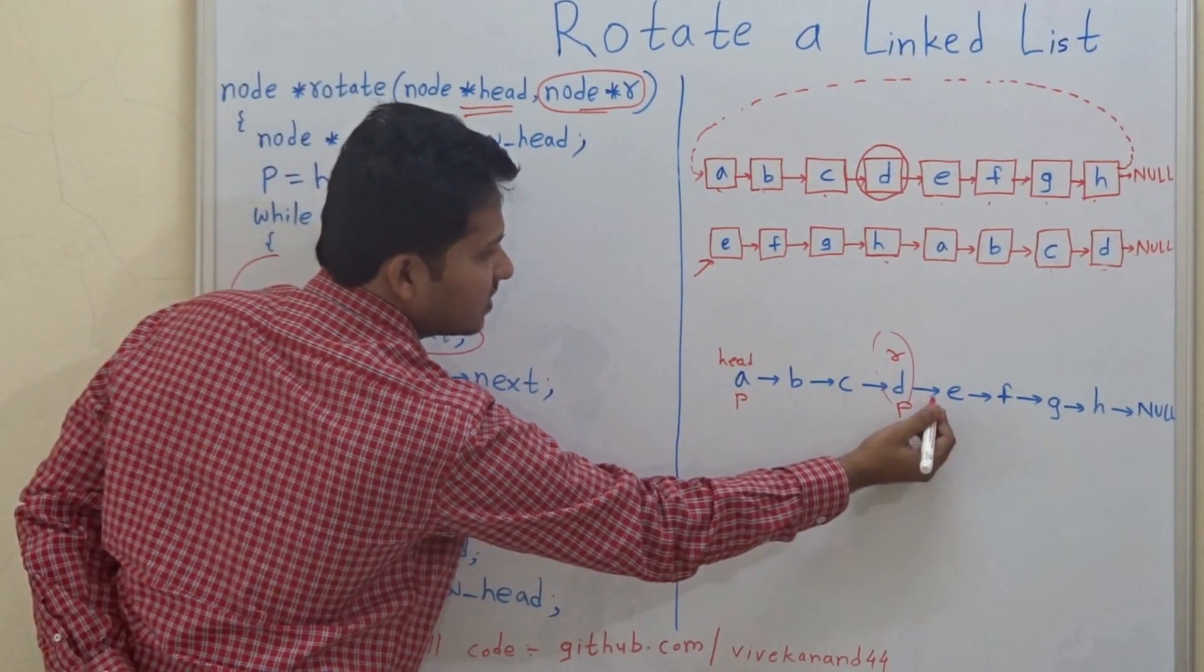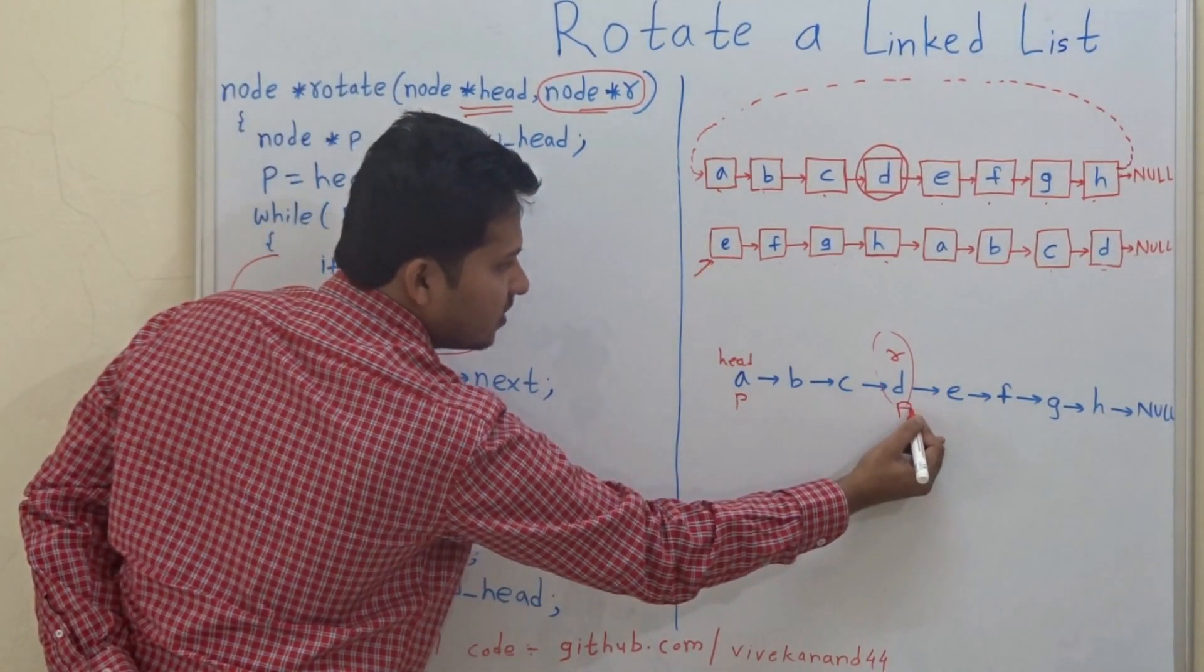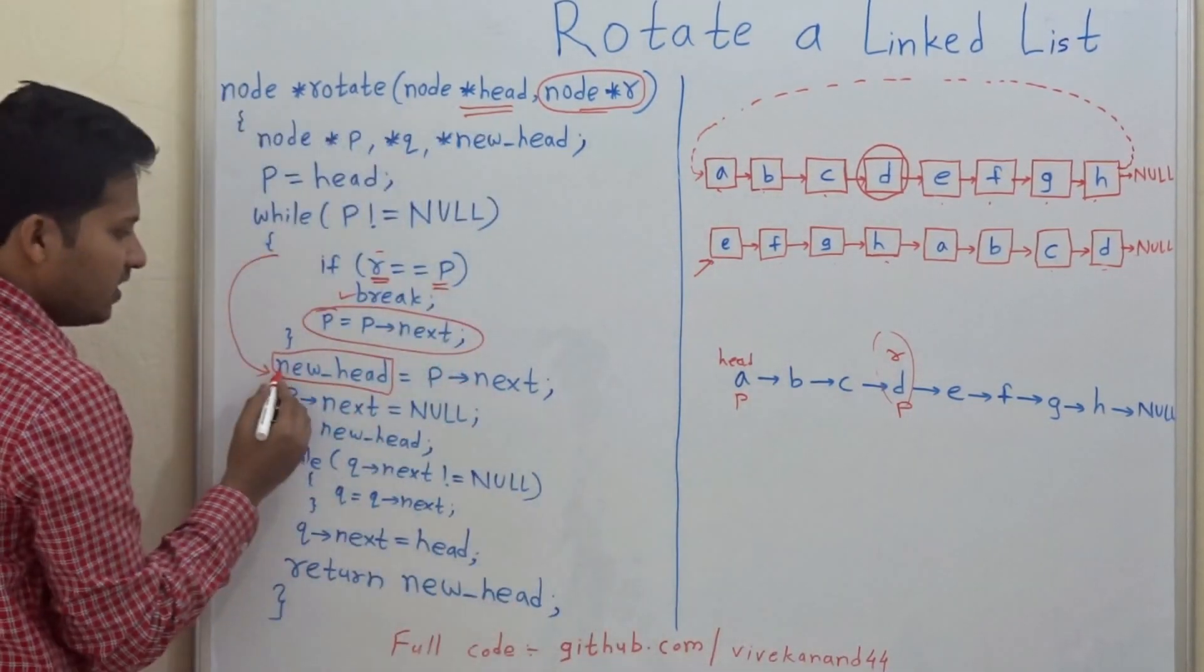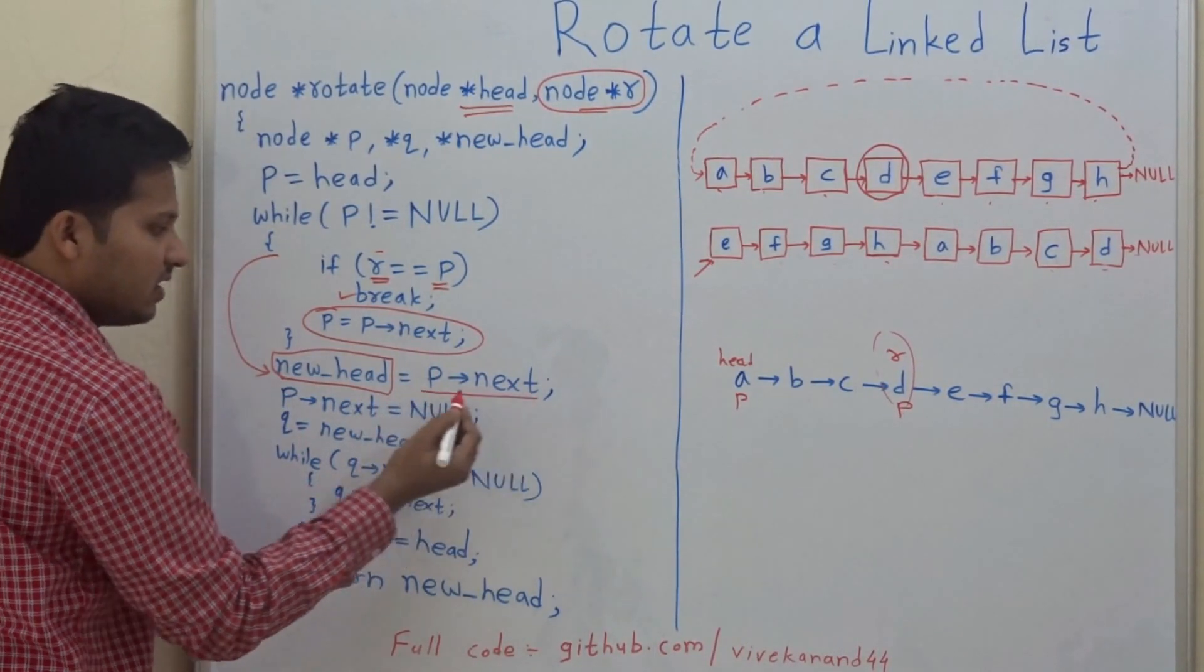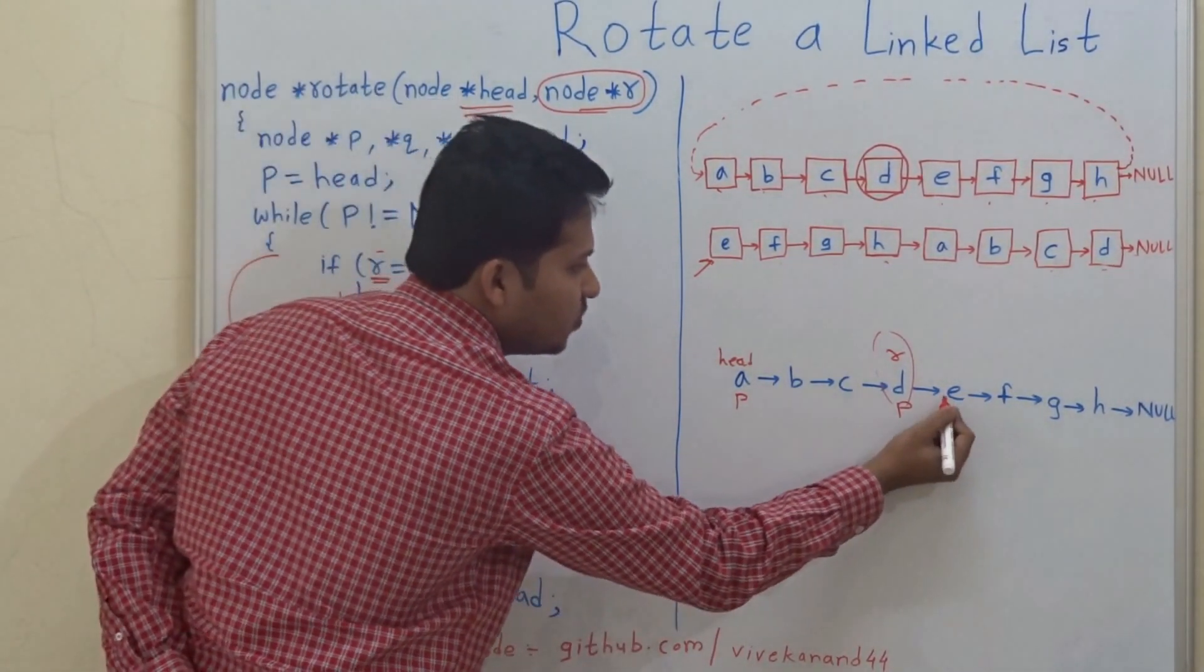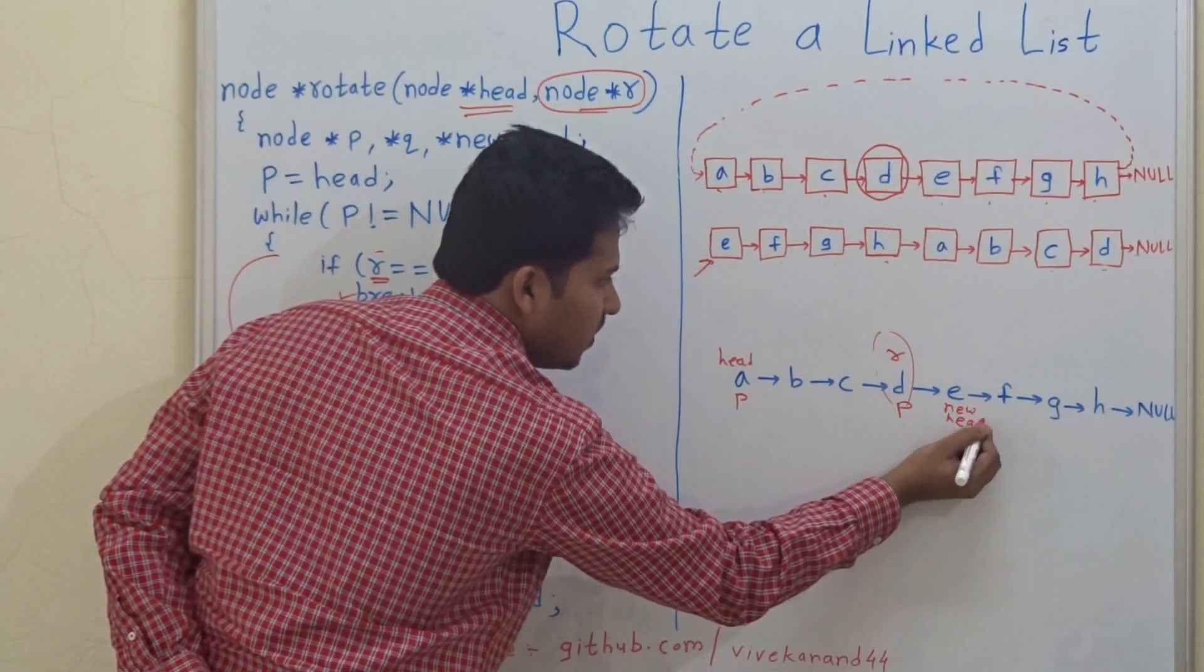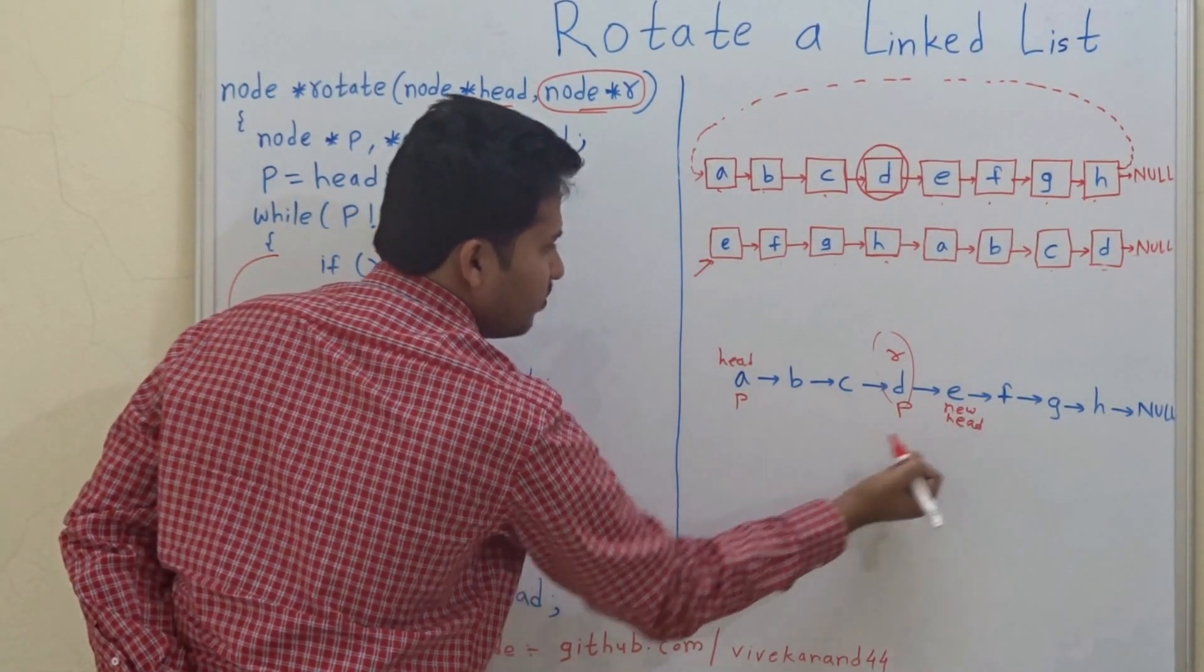In this linked list, our new head is the node next to P, which is why new head is P.next. So we assign it as the new head. This node is called new head, P.next.